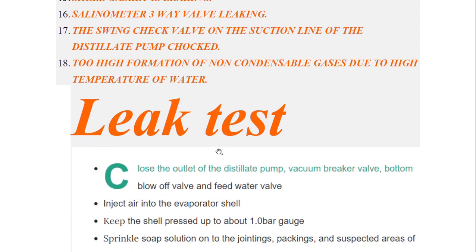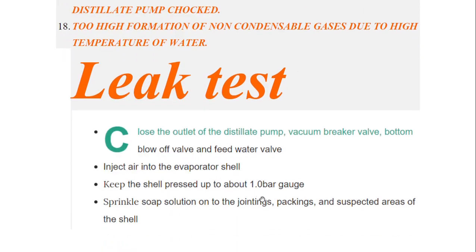At all the joints, packings, and suspected areas of the shell, we apply soap solution and detect any leaks. So it is simple: close the valves, inject air, bring it to one bar pressure, then sprinkle the soap solution. I hope the leak test is also clear for you. Thank you so much.